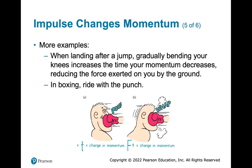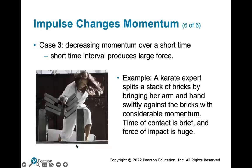More examples: when landing after a jump, gradually bending your knees increases the time your momentum decreases, reducing the force exerted on you by the ground. Landing stiff-legged would probably hurt your knees. In boxing, you ride with the punch — moving backwards gives a small force over a large time. Moving into the punch gives a large force in a small time. The change in momentum is the same, but the force is reduced if you lengthen the time.